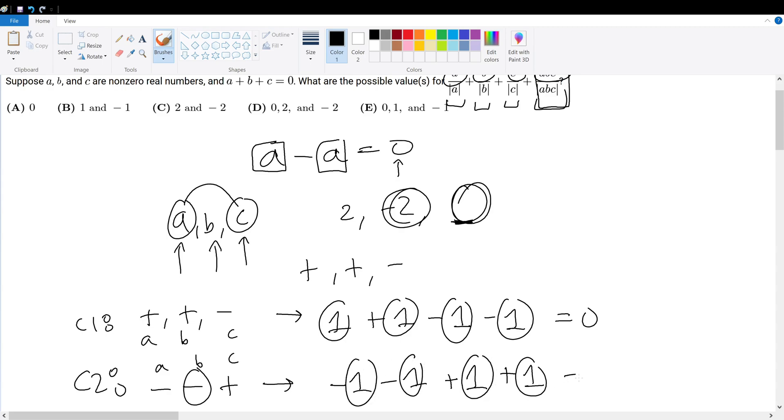Therefore, this simplifies into zero. Well, we exhausted already all possible combinations of the signs of A, B, and C. Therefore, they all both produce the outcome of zero. Therefore, your final answer must be choice A.